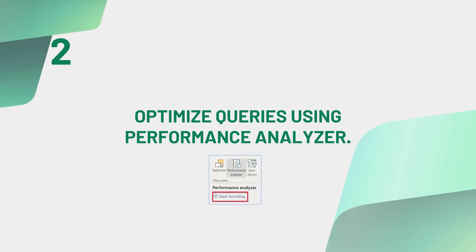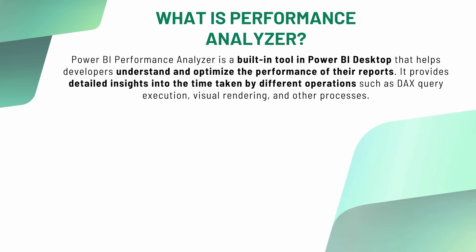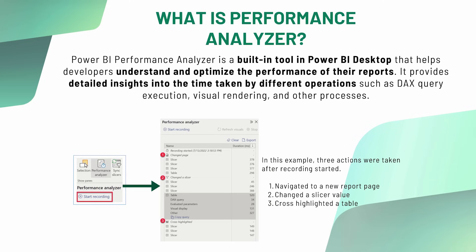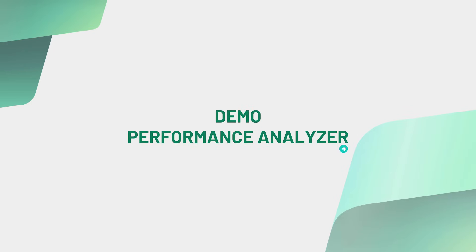Now, point number two: optimizing user queries using Performance Analyzer. Performance Analyzer is a built-in tool in Power BI Desktop that helps you analyze the performance of your report visuals and queries. When you start recording, you get numbers divided into three parts: page change, slicer change, and cross-highlighting. You can see all three sections on screen — navigating to a new report page, changing slicers, or cross-highlighting a table.